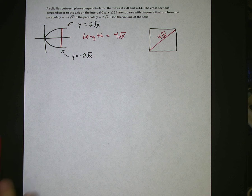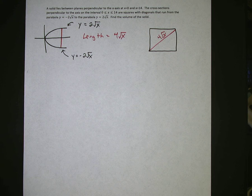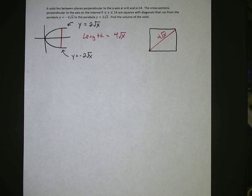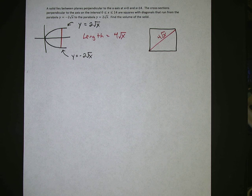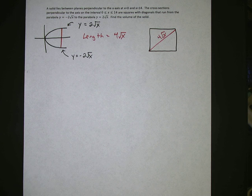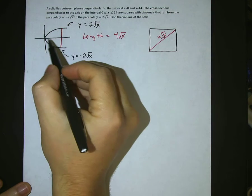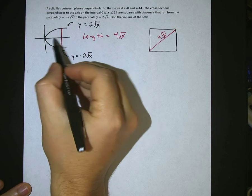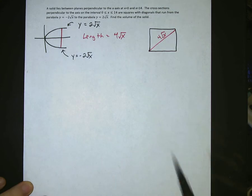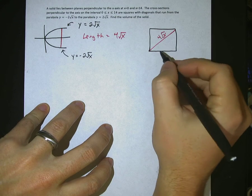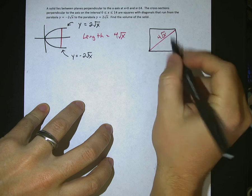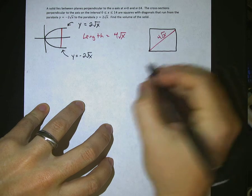Now the problem says we need to figure out the area of the square. In order to figure out the volume, we need the area of all these squares from 0 to 14. Then we'll integrate these squares to get the volume. So the first thing we need to do is figure out what's the area of the square in terms of its diagonal.